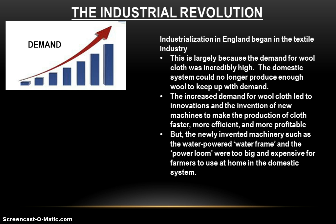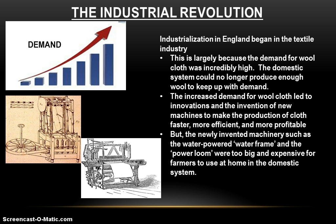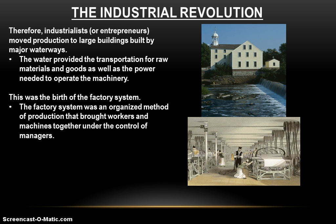Innovation is what drives all economic and industrial growth, and in this case the demand for wool demanded the innovations — if they were going to keep up with demand and keep making money, they had to innovate. But the problem is, a lot of the newly invented machinery — things like the water-powered water frame, a big water-powered spinning wheel that could spin wool into thread much faster than anyone could by hand, or the power loom, a big water-powered machine that weaves cloth by machine much faster than an individual could — these were way too big and too expensive for farmers to use at home in the domestic system. So the entrepreneurs had to innovate in order for industrialization to happen.